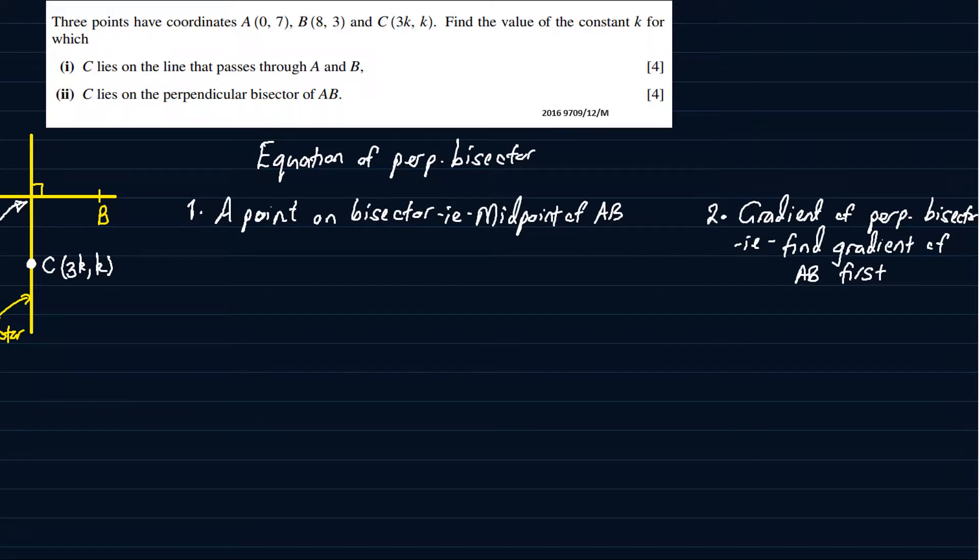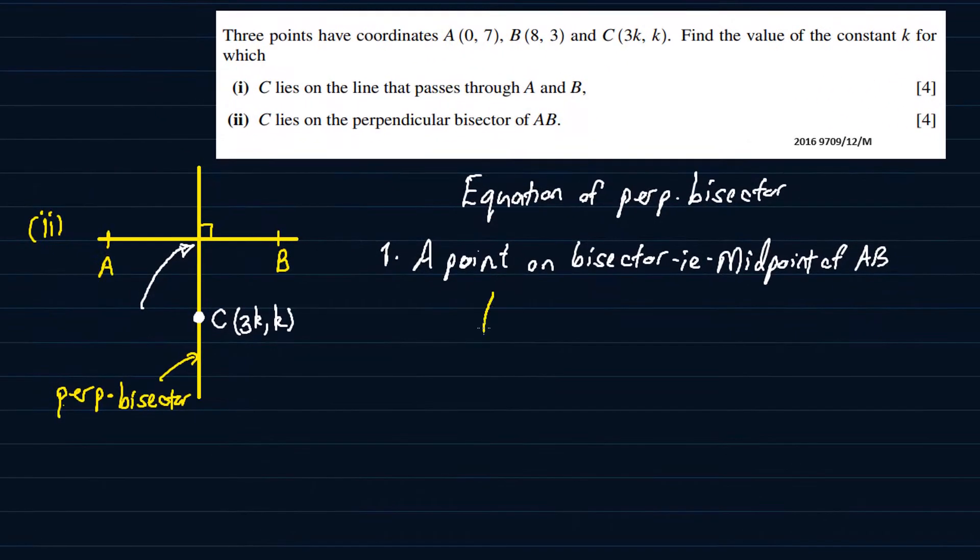Alright, let's start by finding the midpoint of AB. So, A has coordinates 0, 7. B has coordinates 8, 3. So we are going to say, 0 plus 8 divided by 2, 7 plus 3 divided by 2. And this gives us 8 over 2, that's 4, and 10 over 2, that's 5. So we now have the point.